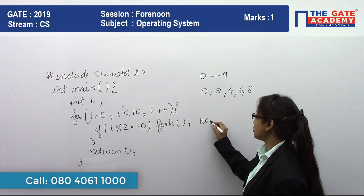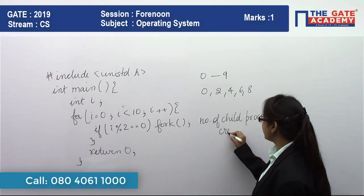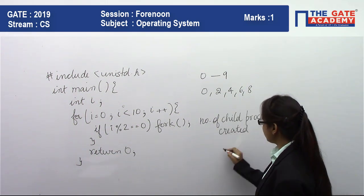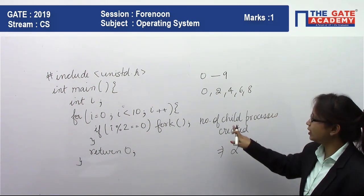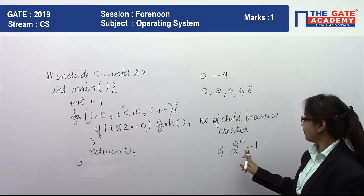And you do directly have a formula that number of child processes created is equal to 2^n - 1, where n is the times this fork is called.